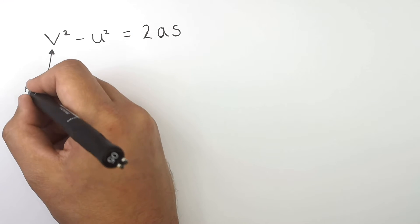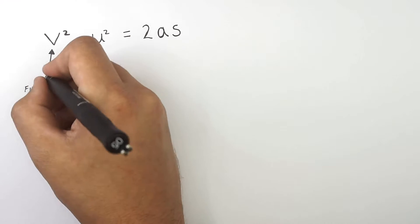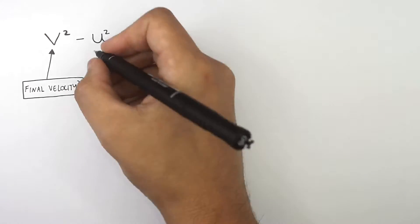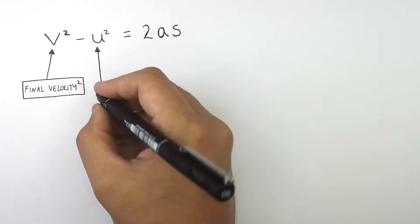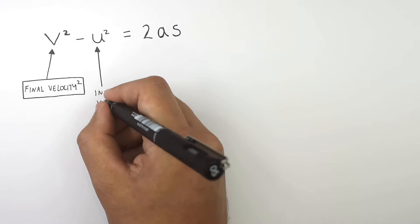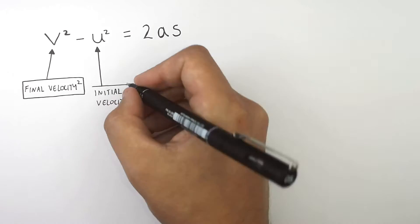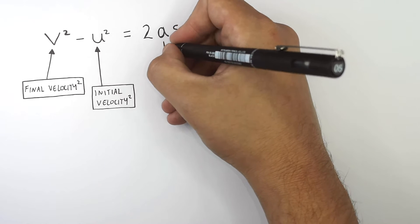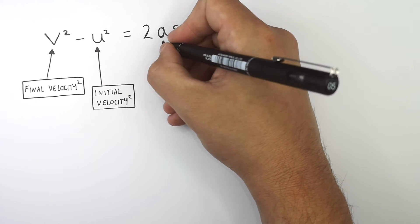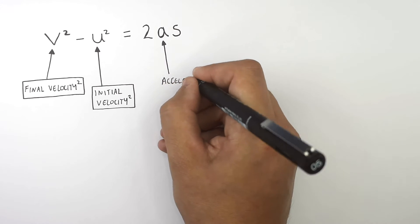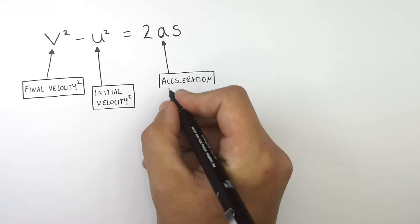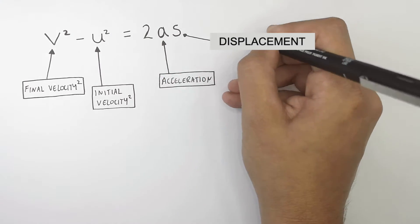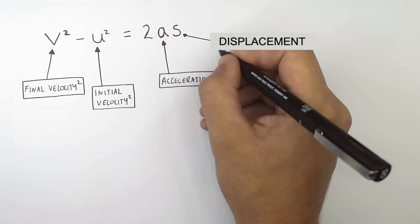V-squared is final velocity squared — V is final velocity. U-squared is initial velocity squared, so it's the initial velocity of the object squared. 2 is just the number 2, and you must multiply 2 by A. A is acceleration — the acceleration of the object. And S is displacement — the displacement of the object.